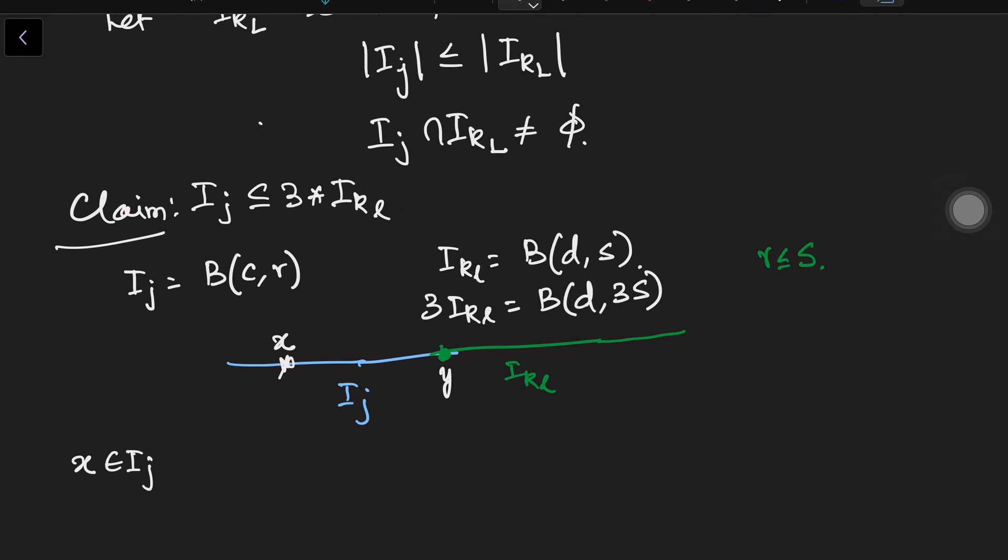Now all that I need to show is that if x is in i_j, I need to show that this is in B(d,3s), 3i_kl. That means I need to start with |x-d|. This is standard process - I will add and subtract c. Do I know anything about |x-c|? I do not know, but do I know anything about c and d? That is also I do not know.